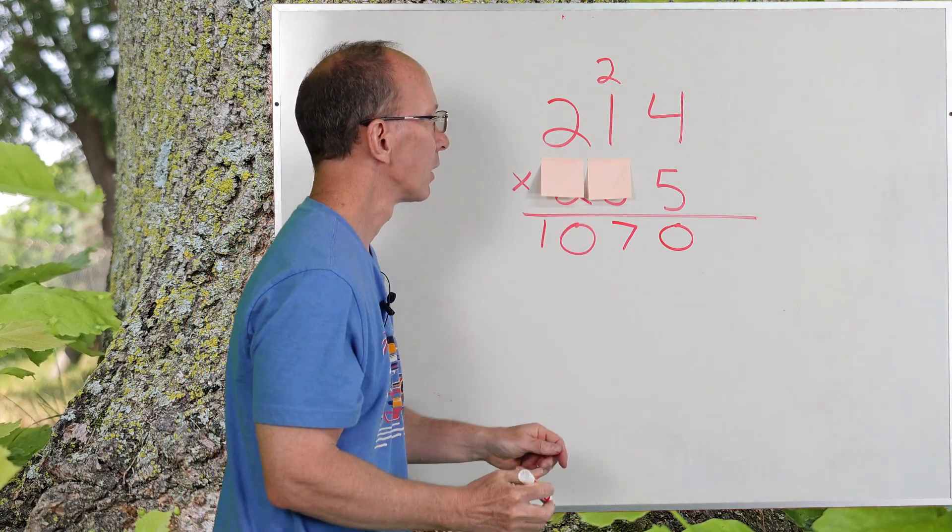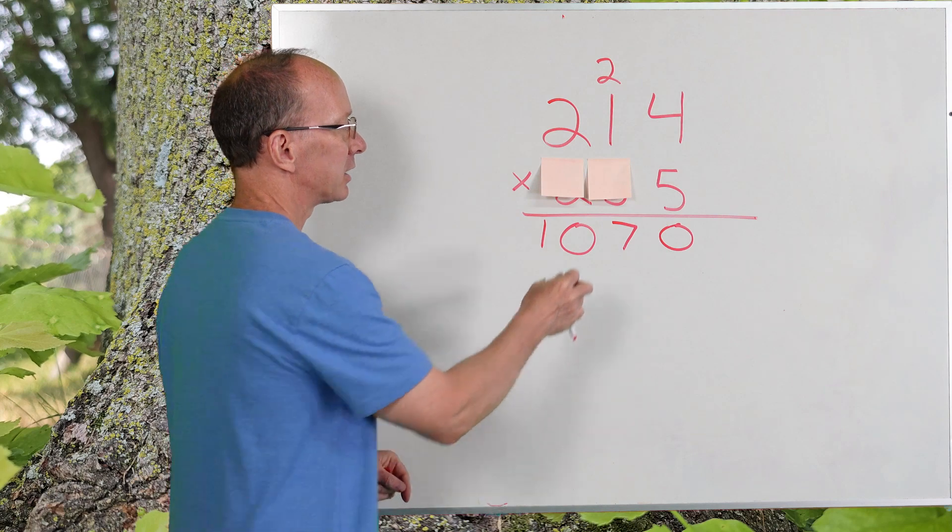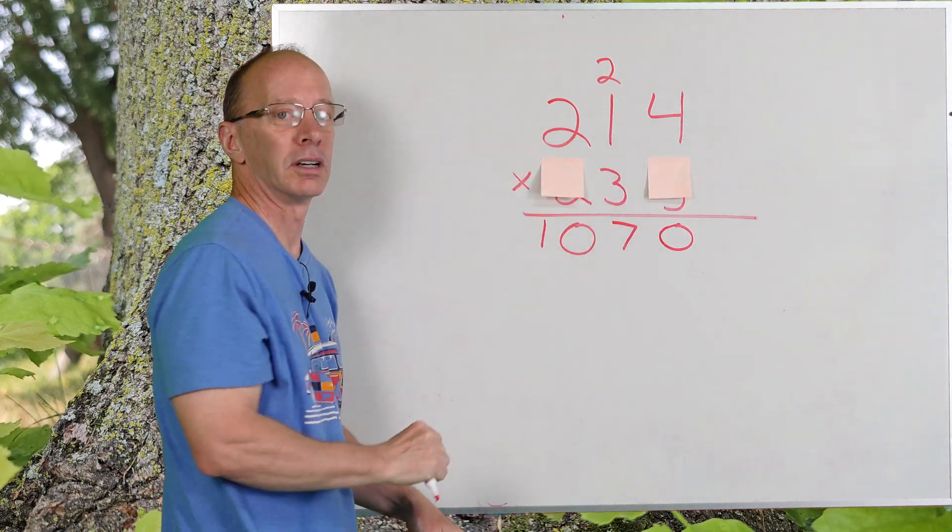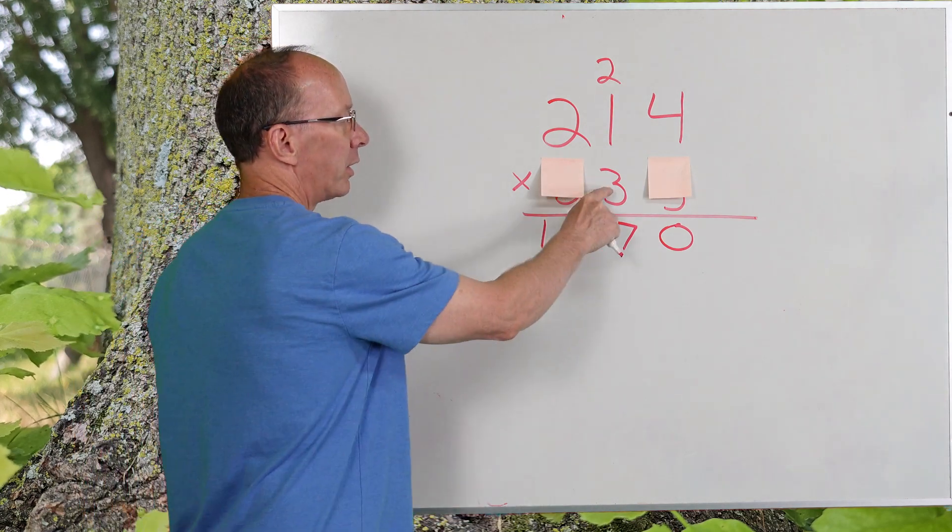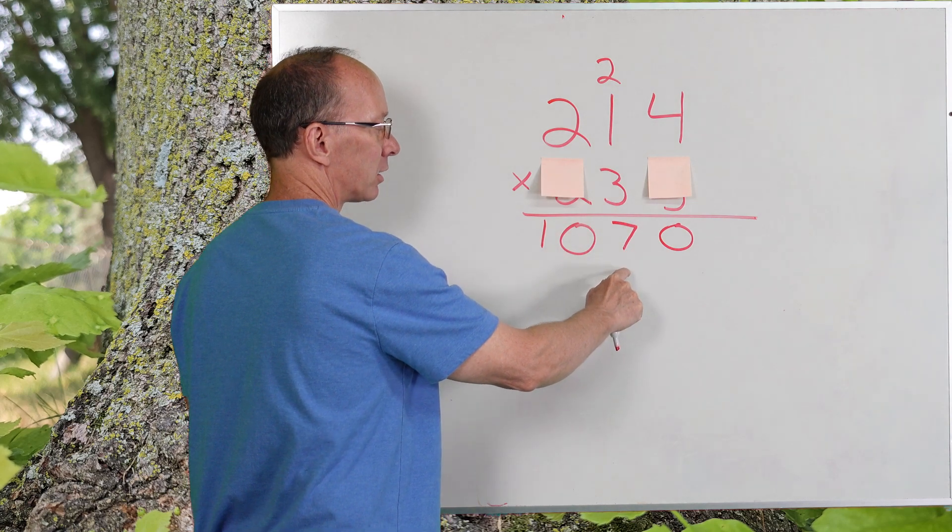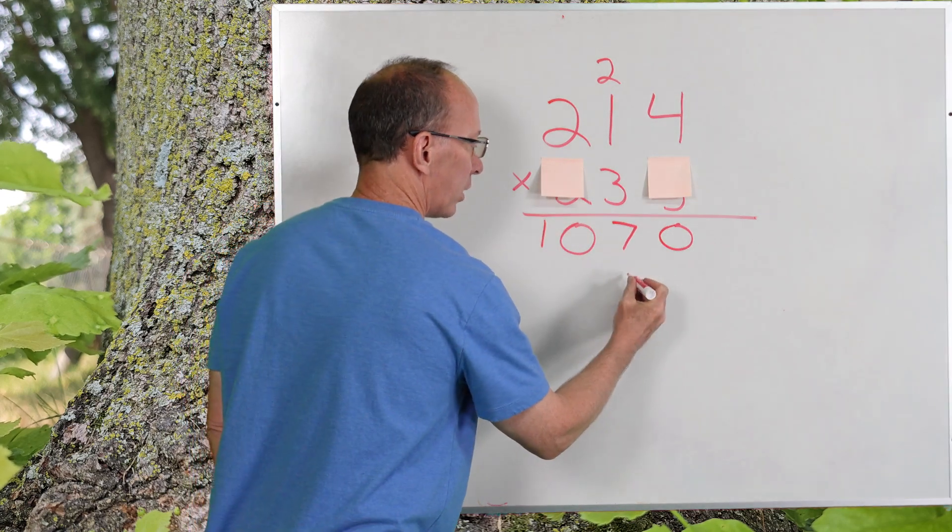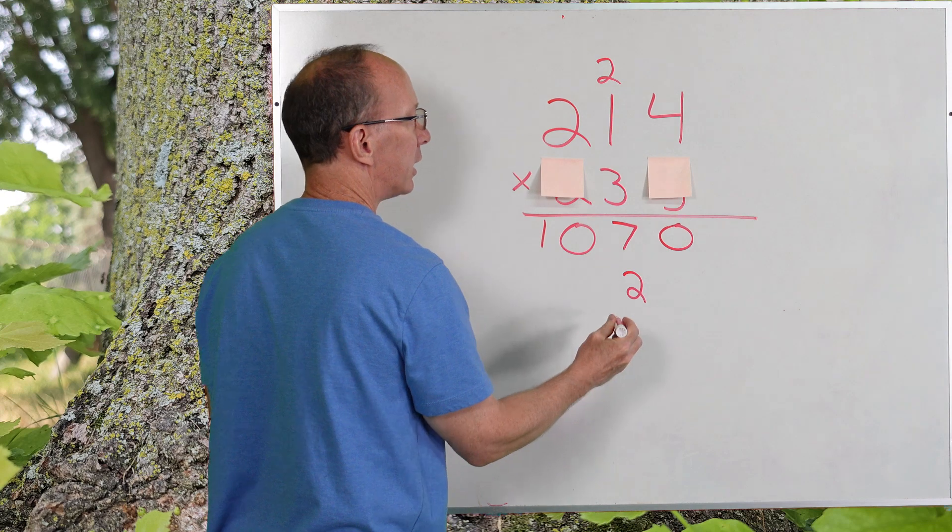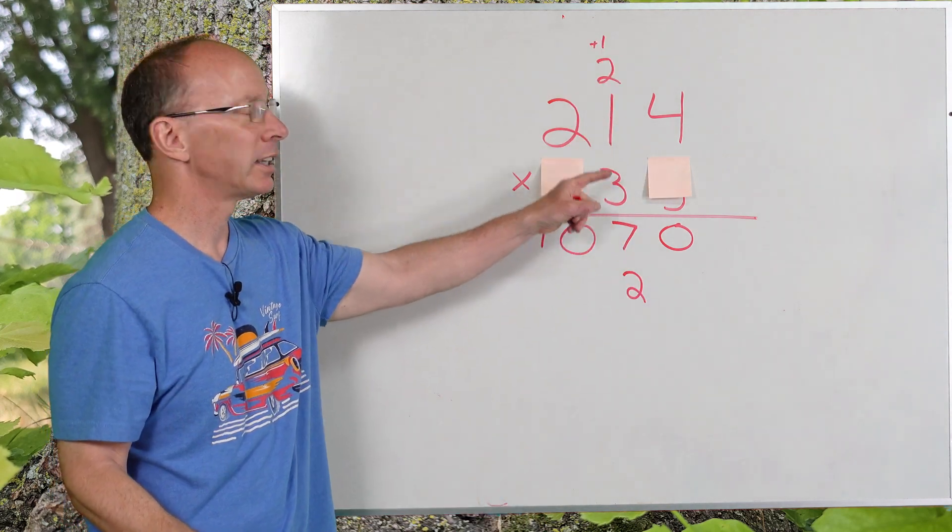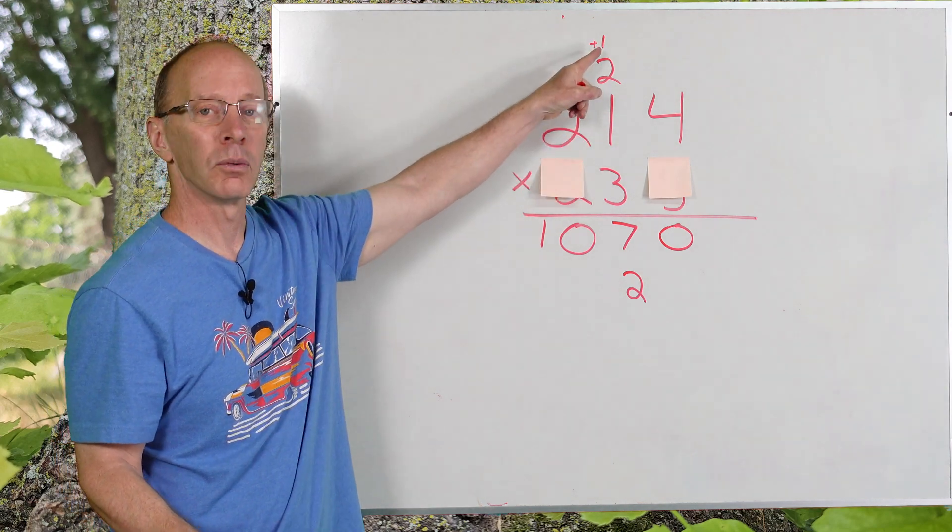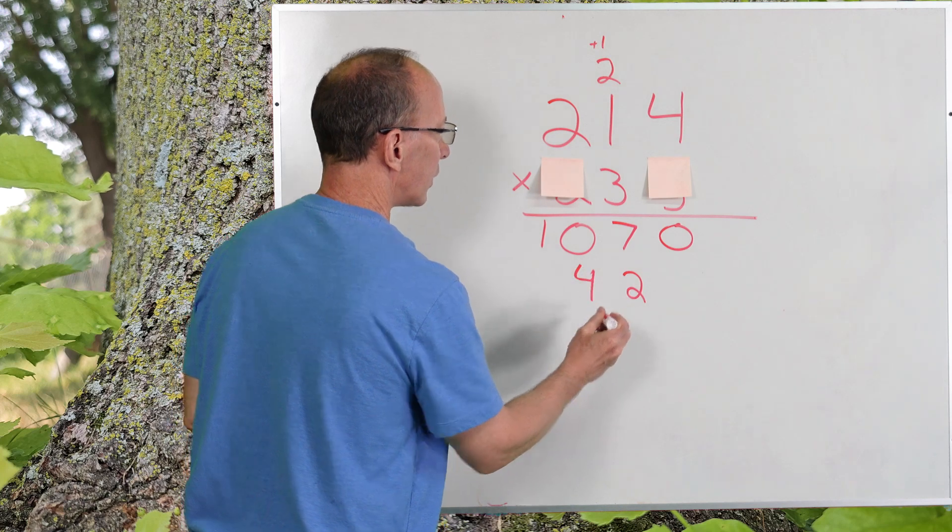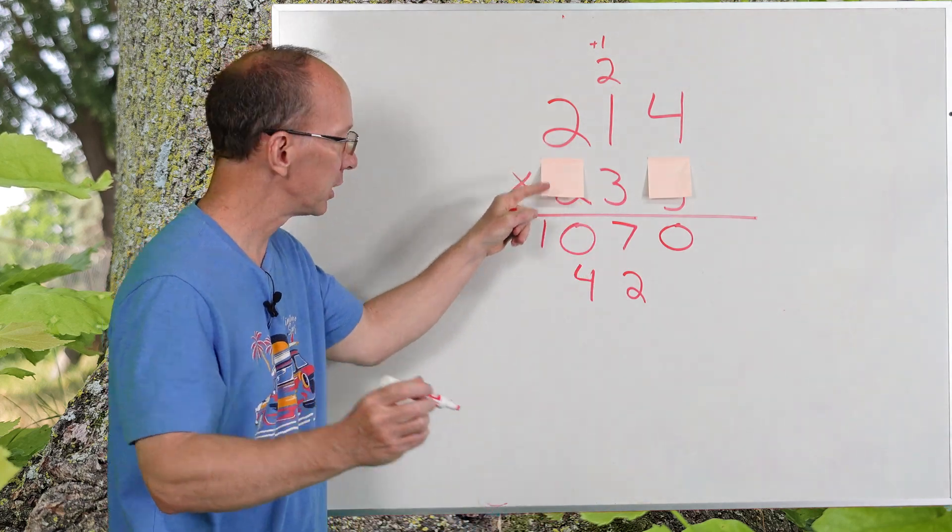Let's begin with the next number, number three. So, I'm taking three times 214. Three times four is 12. Now, since I'm dealing with this three right here, I'm going to start the number right here. So, 12 would be the two right here, and then I'm going to put the one up here. I'm going to be adding that one. So, now I take three times one is three plus the one, which would be four. And now, three times two is six.